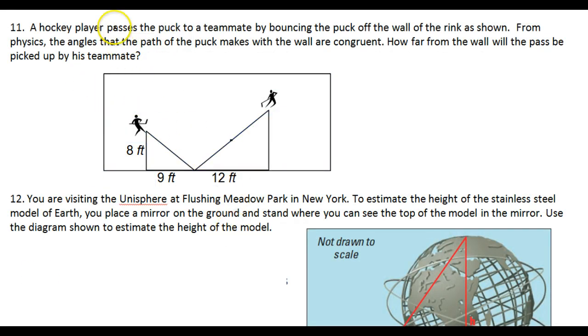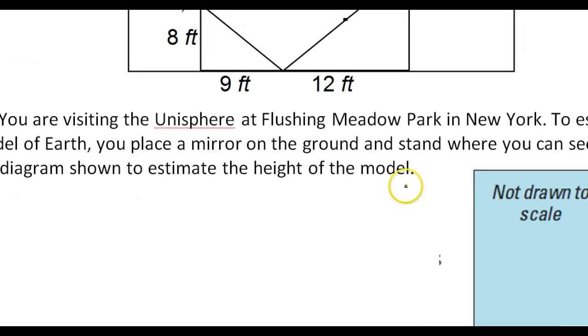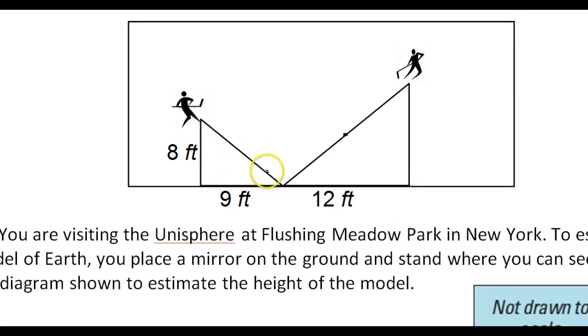So let's look at problem number 11. It's like a word problem, real world problem. A hockey player passes the puck to a teammate by bouncing the puck off a wall of the rink as shown. From physics, the angles that the path of the puck makes with the wall are congruent. So in other words, let me zoom in a little bit. The angle of incidence is equal to the angle of reflection.